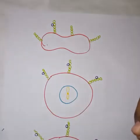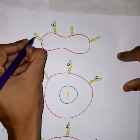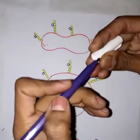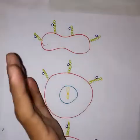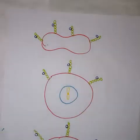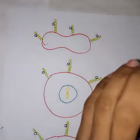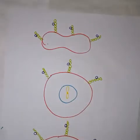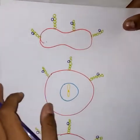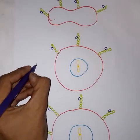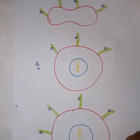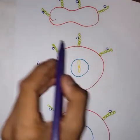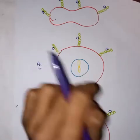Here you can see: H antigen is present on all types of blood groups. For example, this is a red blood cell — we don't know whether the individual's blood group is A, B, O, or whatever — but we know that whatever the blood group is, H antigen must be present. It must be present in all types of blood groups. If the individual has blood group A, we know that on the H antigen, a NAGA molecule will be present over this oligosaccharide chain.